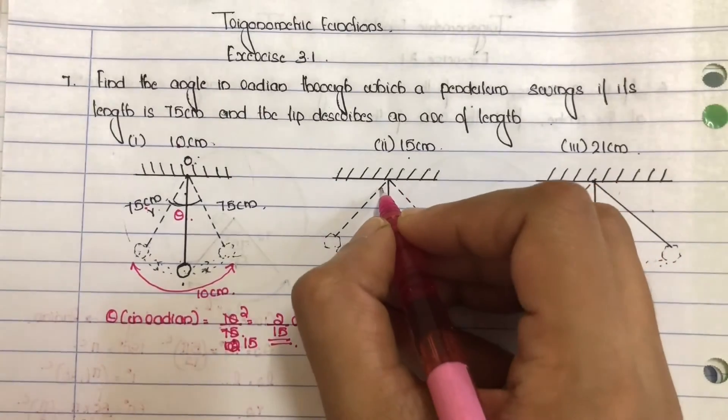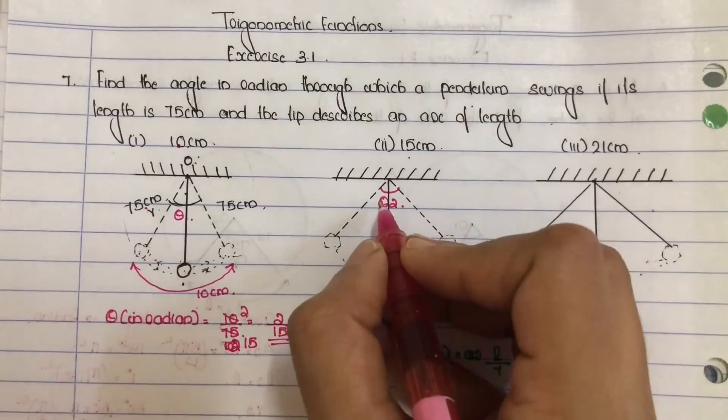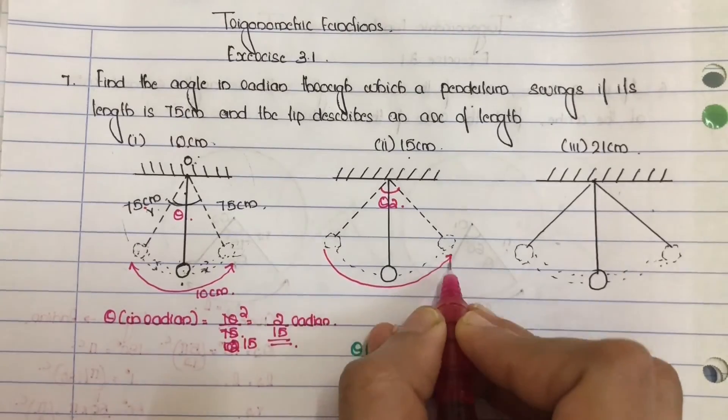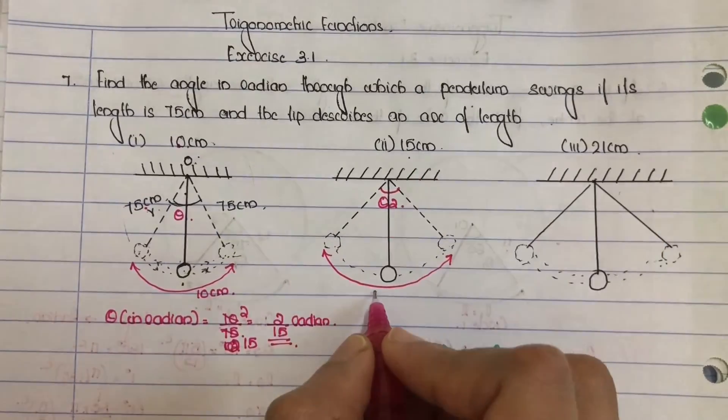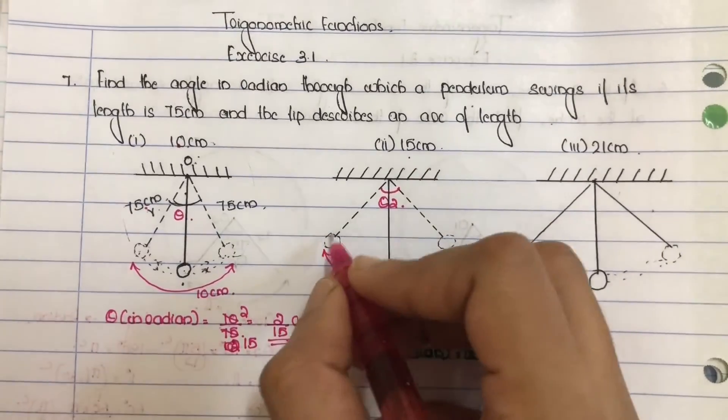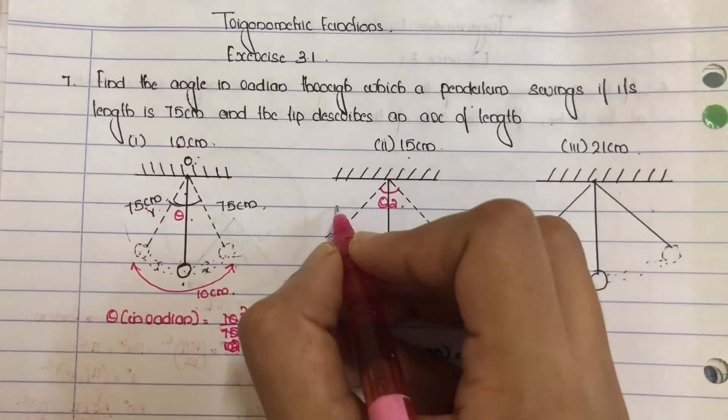In the second case we have angle theta 2. Arc length 15 centimeter, radius string length is the same, that is 75 centimeter.